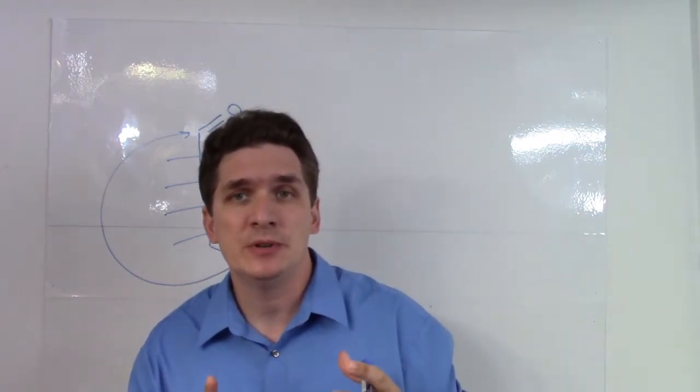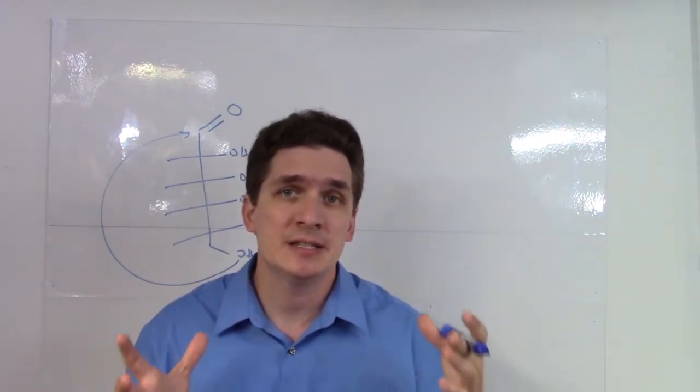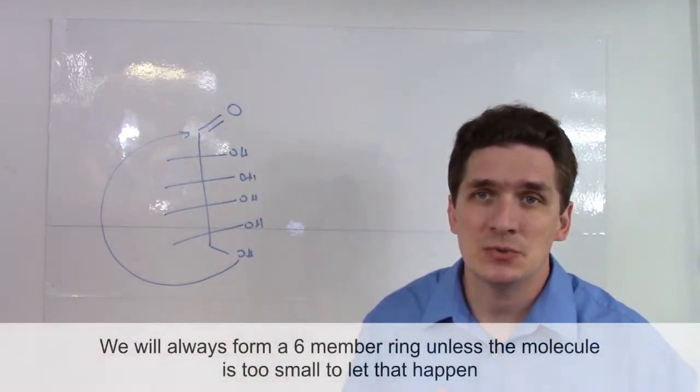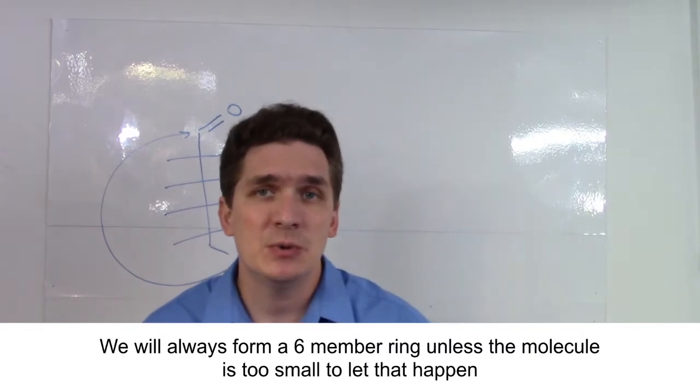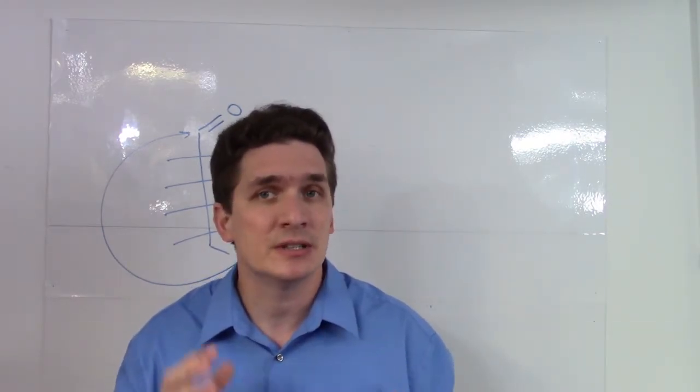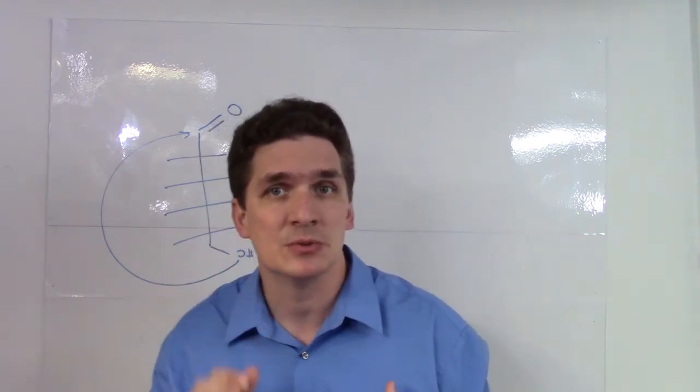Now, the type of ring we formed, as you may guess, is ideally a six-membered ring. But if we have something like a pentose, which has five groups on it, the best we can do is form a five-membered ring. But if we have a hexose or a septose or something like that, we can definitely form the six-membered ring.